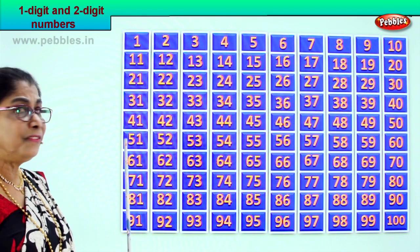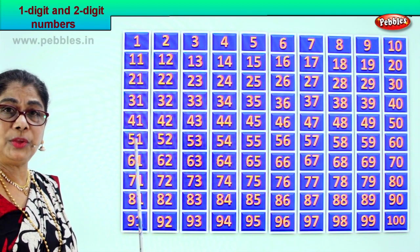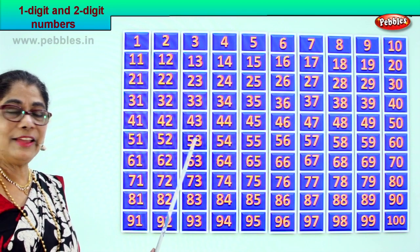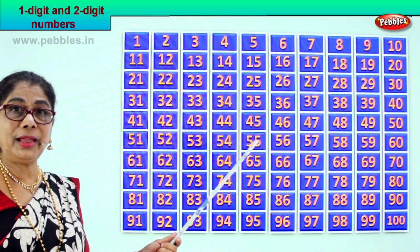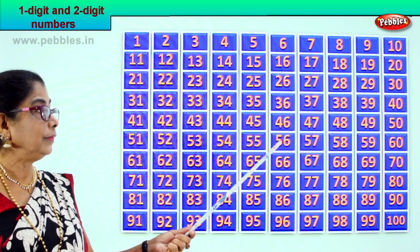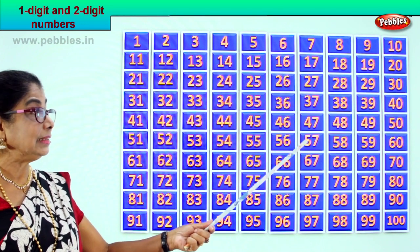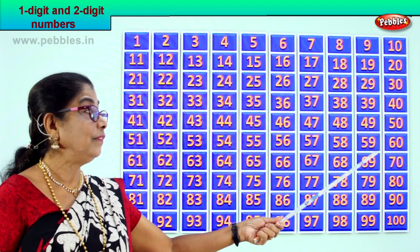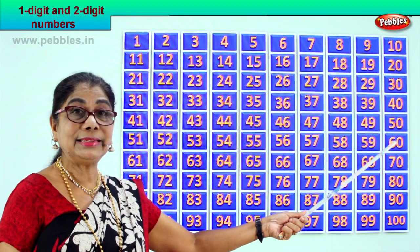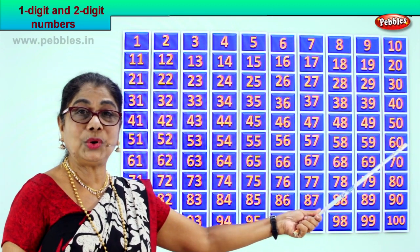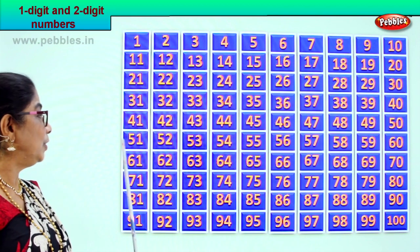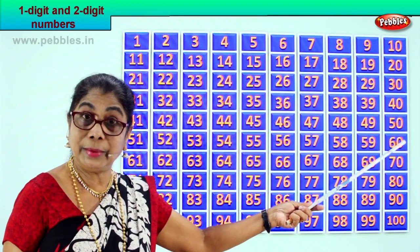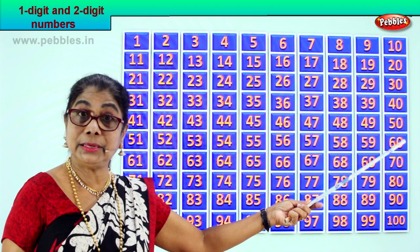Now 5 tens — 51, 52, 53, 54, 55, 56, 57, 58, 59, and 60 — which is 6 tens and 0 ones. 51 to 60, all of them are two-digit numbers.